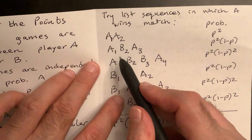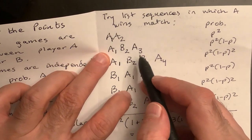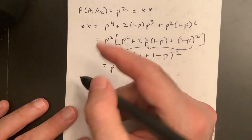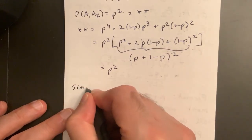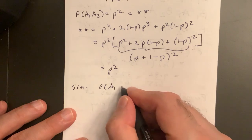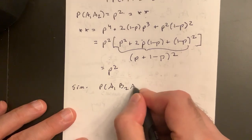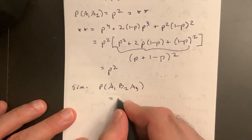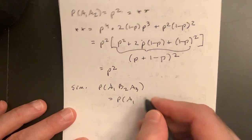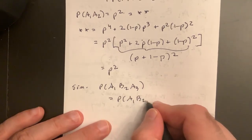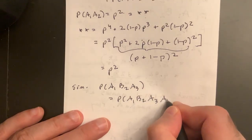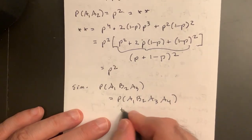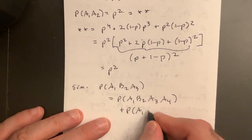For example, this probability. So let's write that one down too. Similarly, the actual sequence A1 B2 A3, I could write A1 B2 A3 A4 plus P A1 B4.